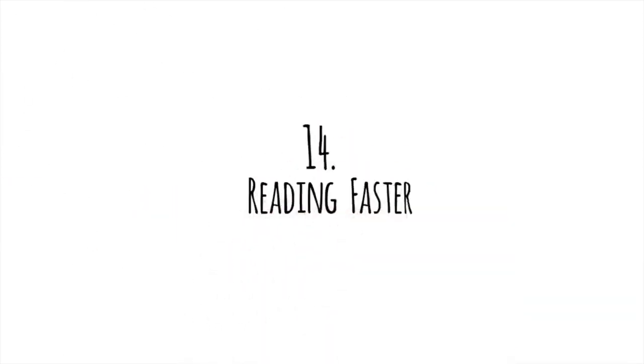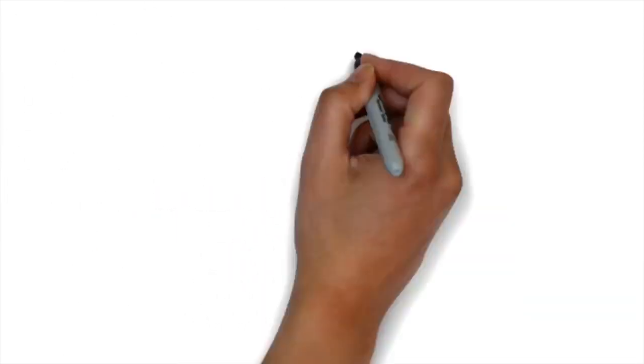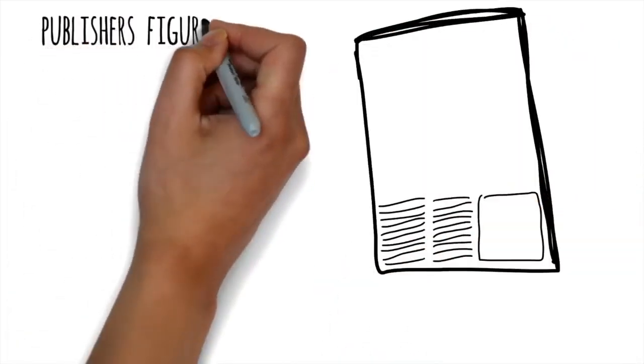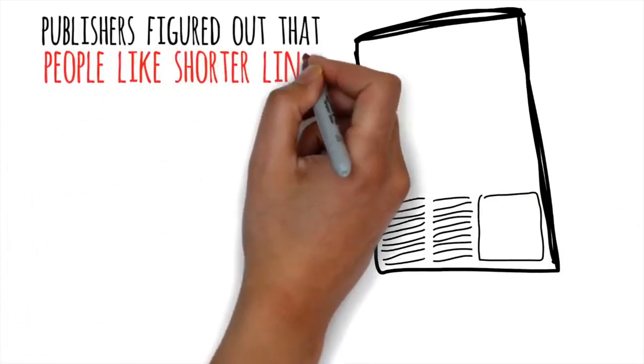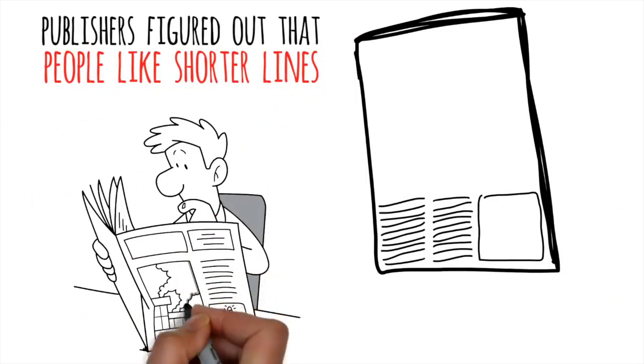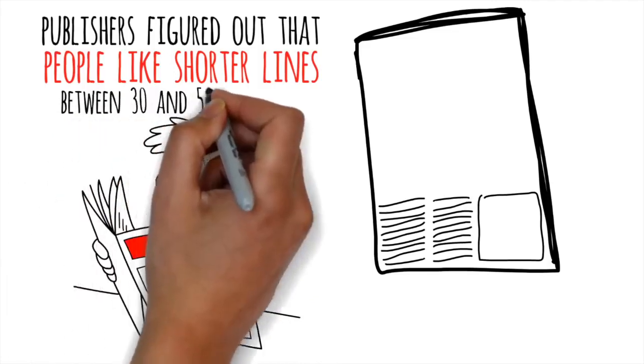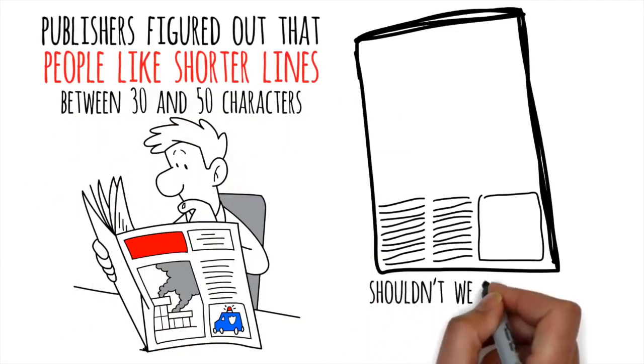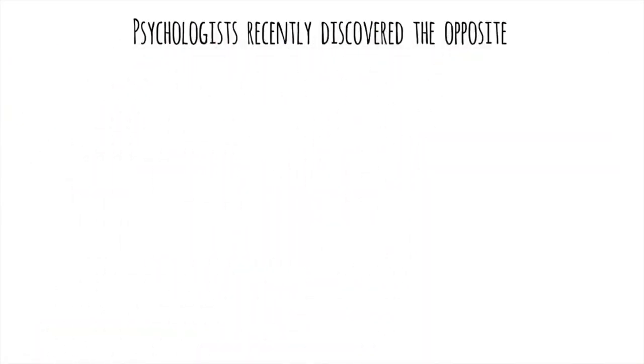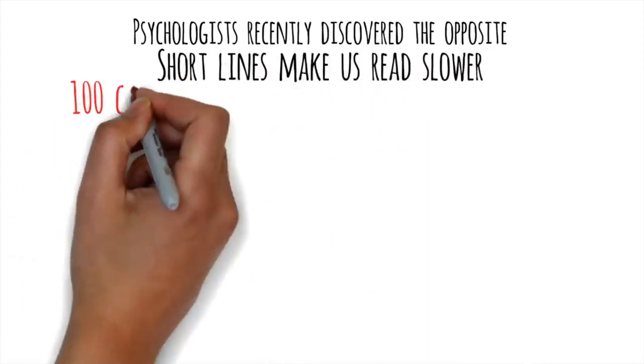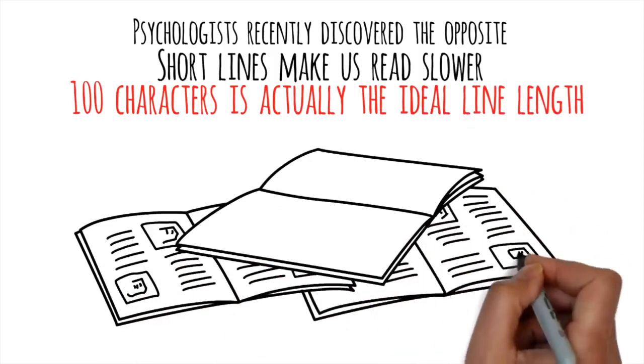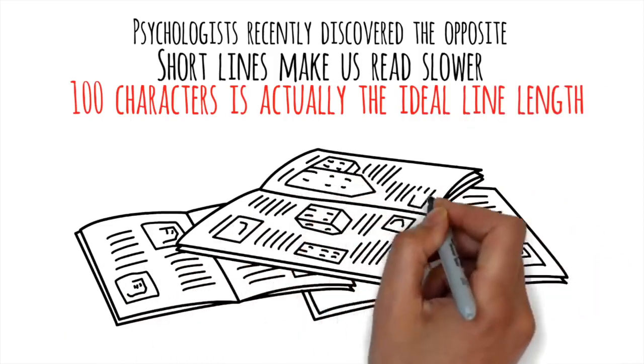Number 14. Reading Faster. Have you ever wondered why newspapers use such thin columns? Years ago, publishers figured out that people like shorter lines. People were more likely to keep reading, so newspapers kept their lines between 30 and 50 characters. Since we like short lines better, shouldn't we read them faster too? Psychologists recently discovered the opposite. Short lines make us read slower. 100 characters is actually the ideal line length, even though it's double or triple what most newspapers and magazines use.